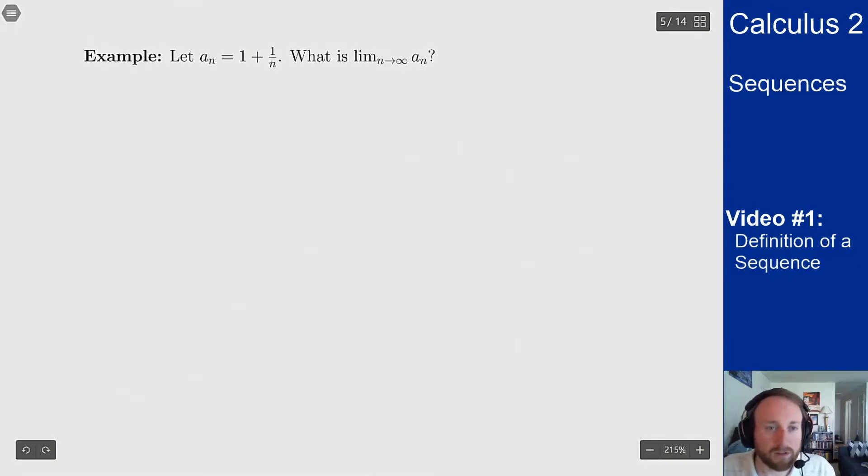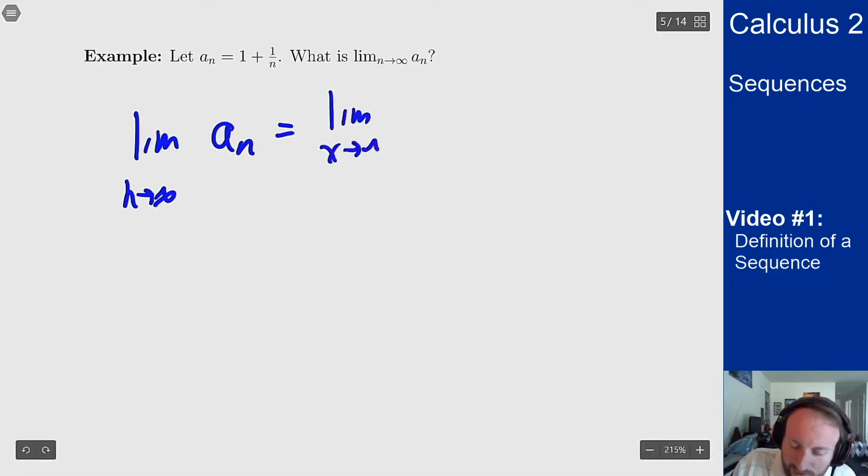Here's one brief example. If I have an as a sequence 1 plus 1 over n, I want to know the limit as n goes to infinity of an. Based on our last theorem, this should be the same thing as the limit as x goes to infinity of f of x for the function f of x is 1 plus 1 over x.